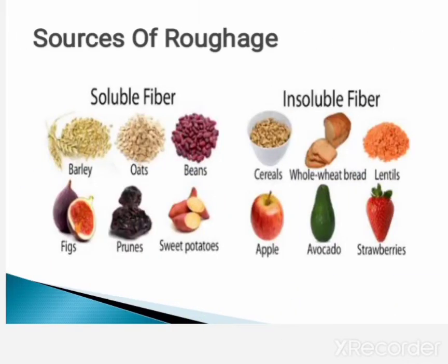Now some sources of roughage. As I already taught you, roughage is of two types: soluble and insoluble. Roughage is mainly obtained from plant products, for example, grains, pulses, fruits, and vegetables. These are the important sources of roughage.